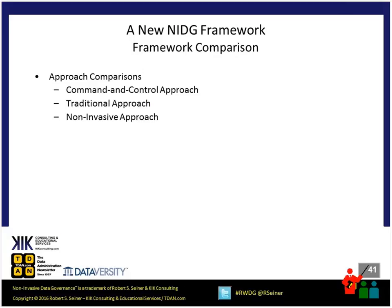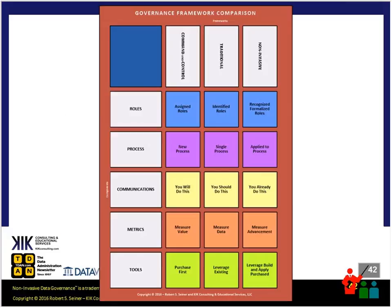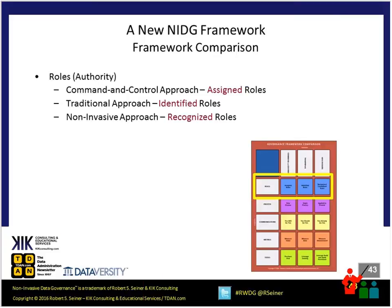The last thing I want to talk about today is using a model similar to the framework to compare the different components across the different approaches to data governance. I typically talk about three different approaches: the command and control approach, the traditional approach, and the non-invasive approach. This diagram cross-references the different components down the left side with the different approaches to governance across the top.